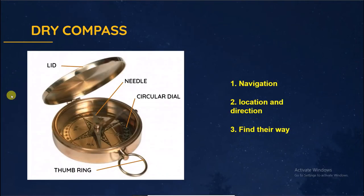Now discuss about dry compass and parts. The parts are: lid, needle used for pointing north, circular dial used for measuring an angle. The dial whole angle is 360 degrees, and finally thumb ring, which is used for holding.